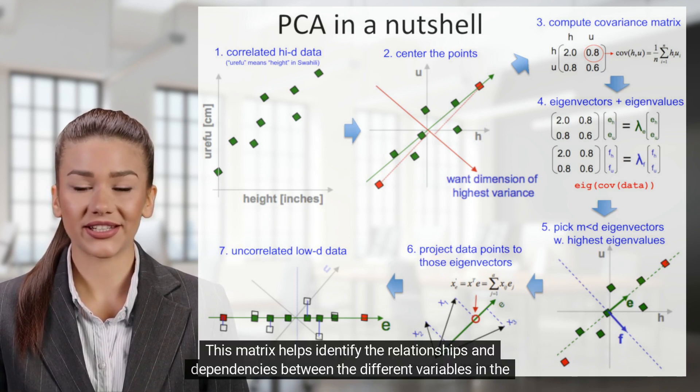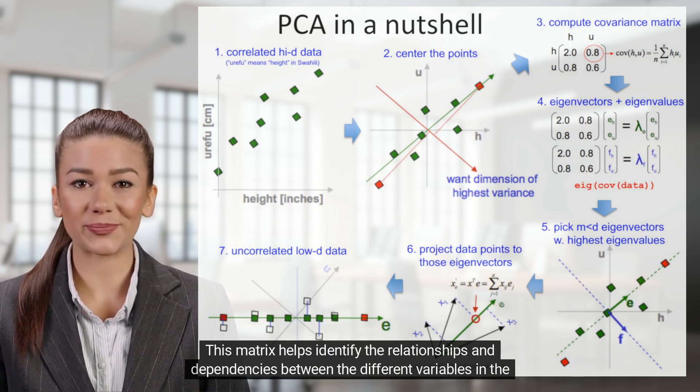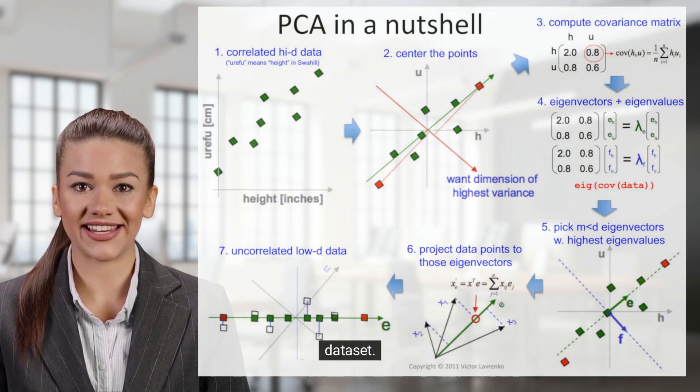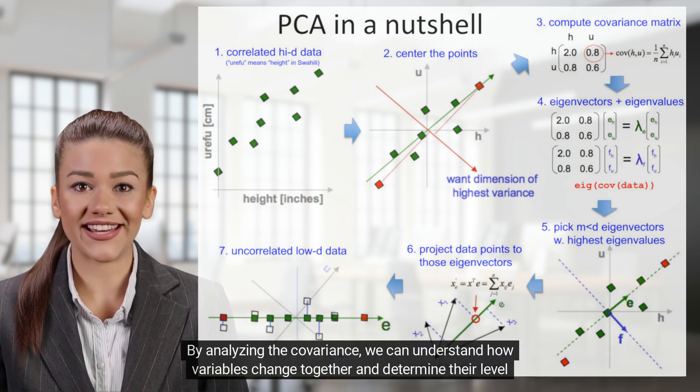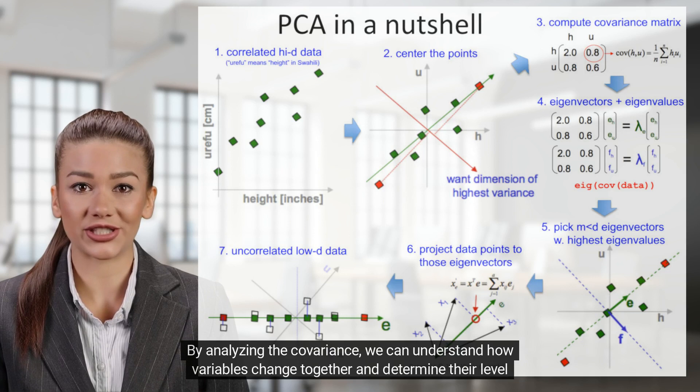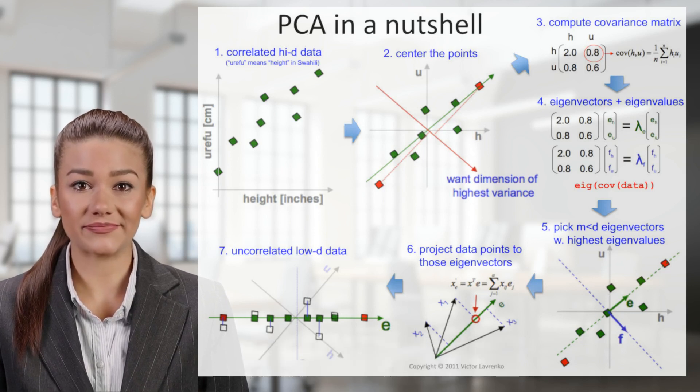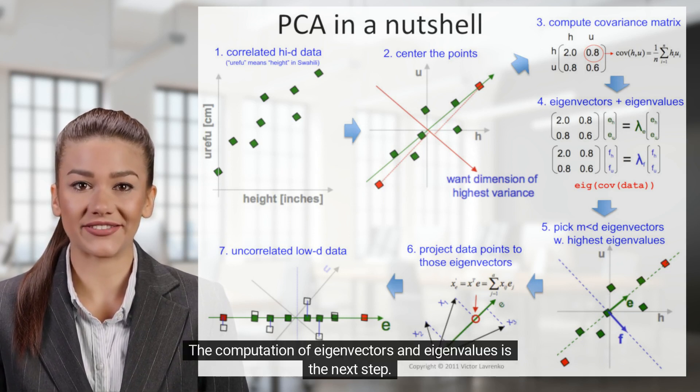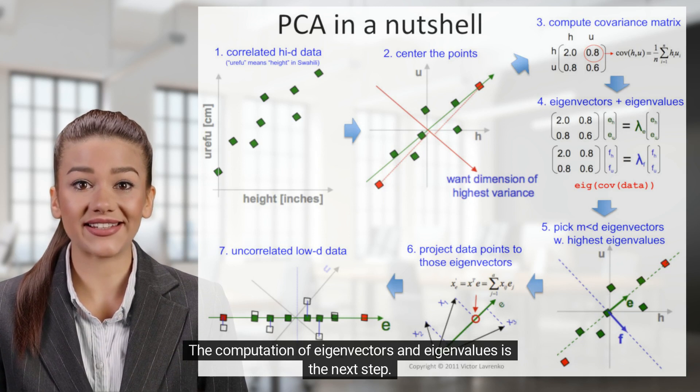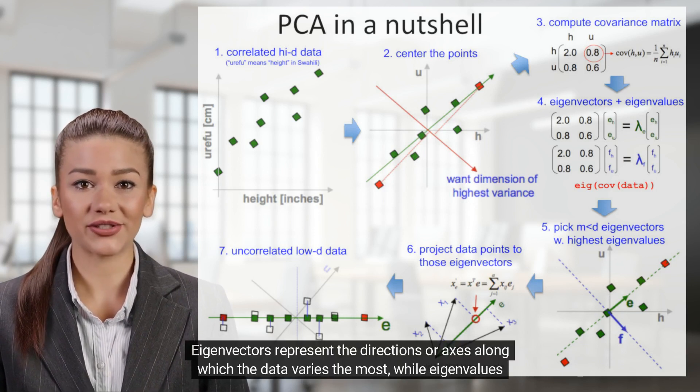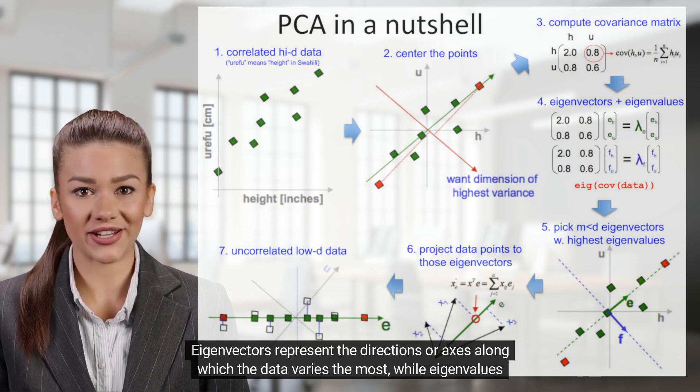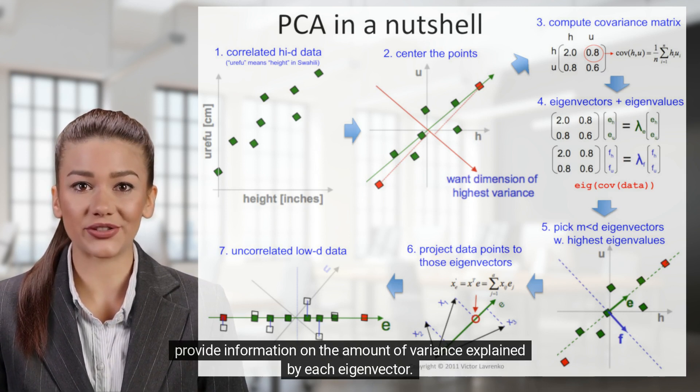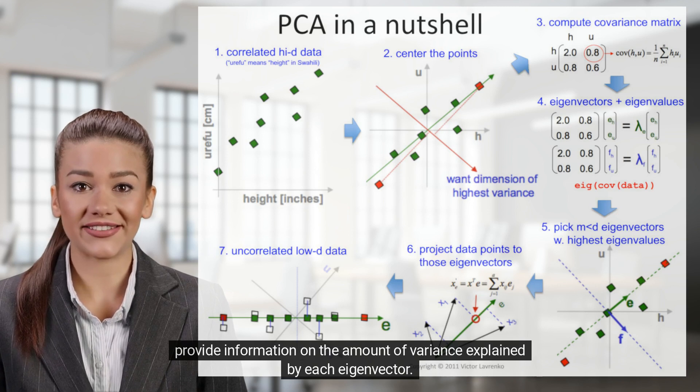This matrix helps identify the relationships and dependencies between the different variables in the dataset. By analyzing the covariance, we can understand how variables change together and determine their level of correlation. The computation of eigenvectors and eigenvalues is the next step. Eigenvectors represent the directions or axes along which the data varies the most, while eigenvalues provide information on the amount of variance explained by each eigenvector.